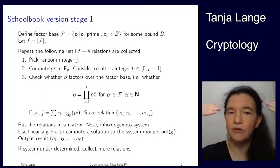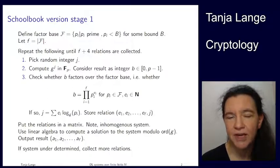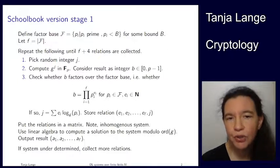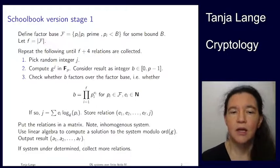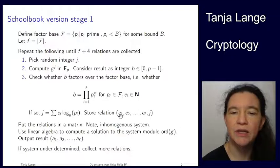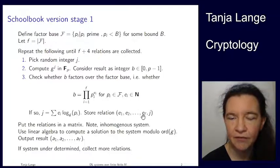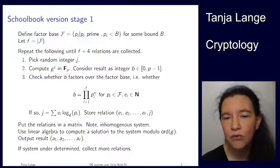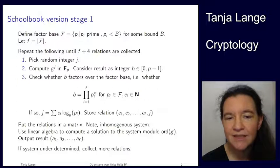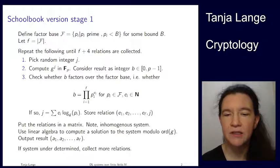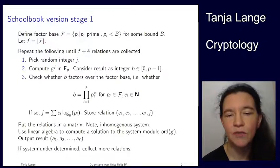We repeat this until f plus four relations are collected, where f is the size of the factor base. A larger factor base makes factoring easier but requires more repetitions. At the end of the stage, we put everything into a matrix and solve the system of equations — looking at the exponents of the small primes and the j values — to figure out the discrete logarithm of each prime p_i with base g.